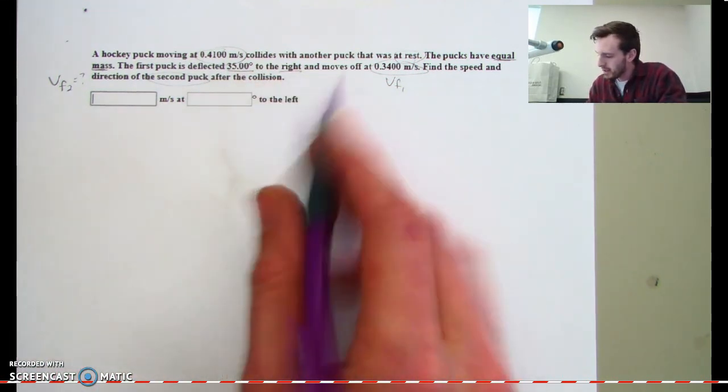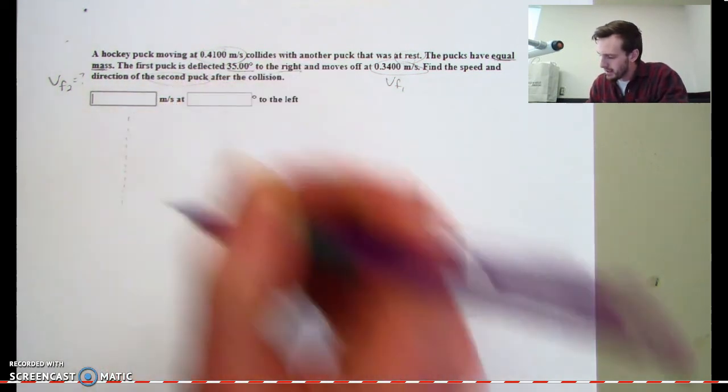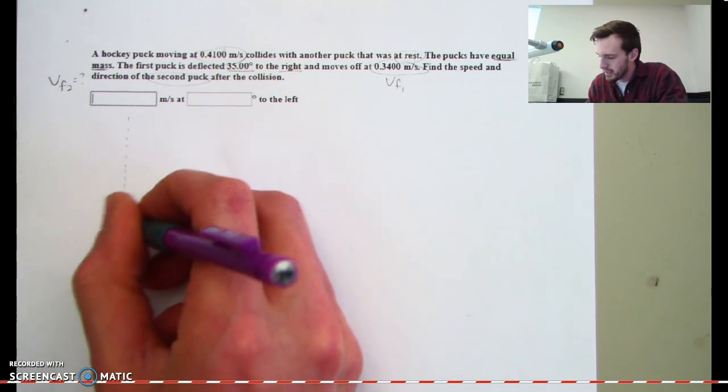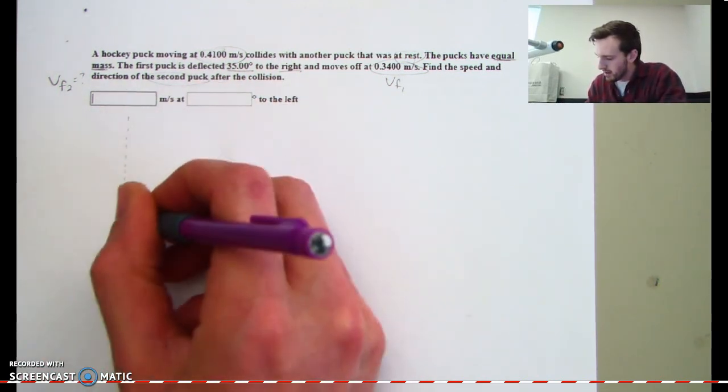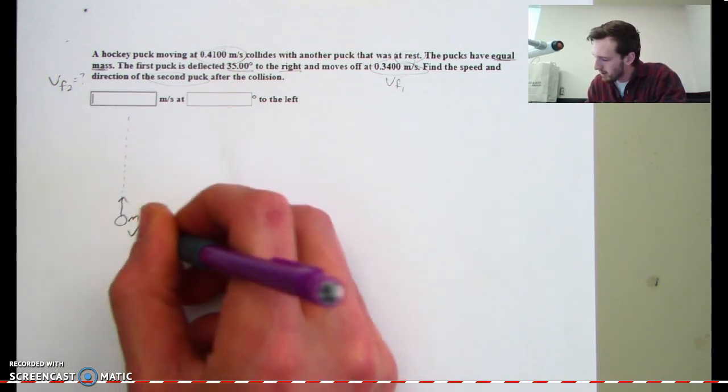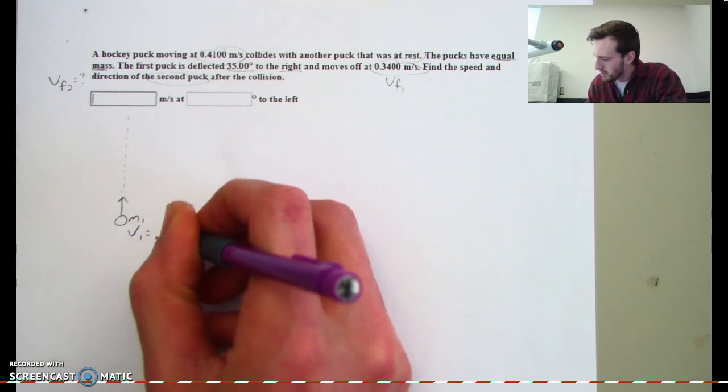Now, the whole thing about to the right, to the left, since they used that idea, I'm going to draw this dotted line that you'll often see referred to in textbooks as the normal. The 90 degree mark, if you will. And this is our mass one. And it said it had a velocity of 0.41 meters per second.